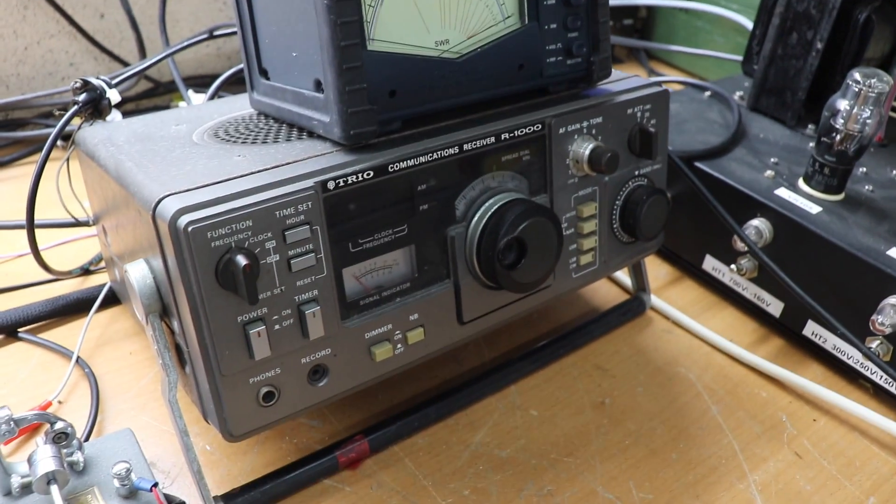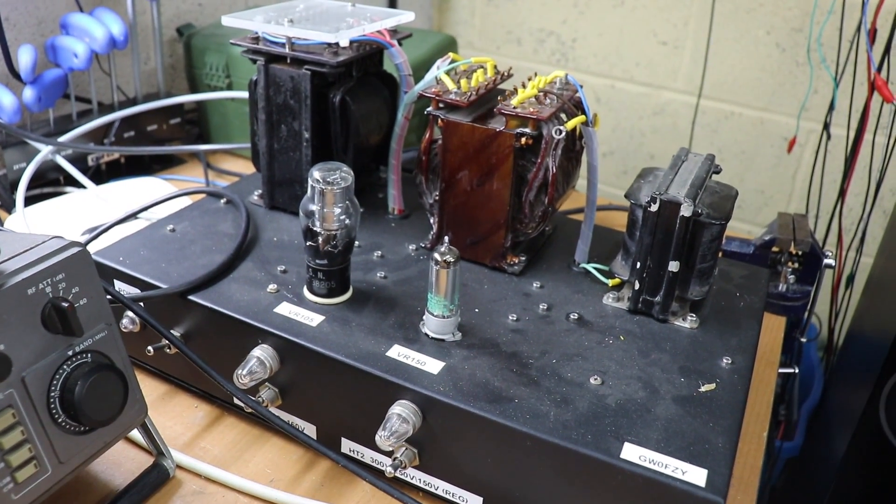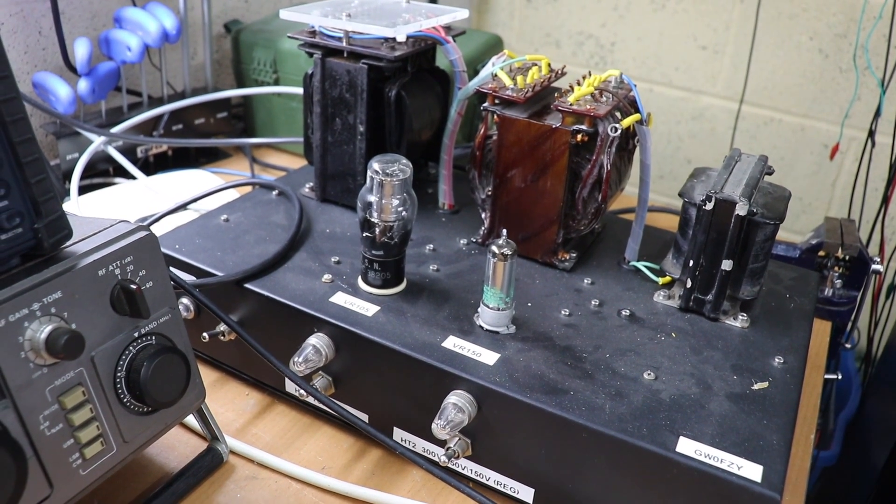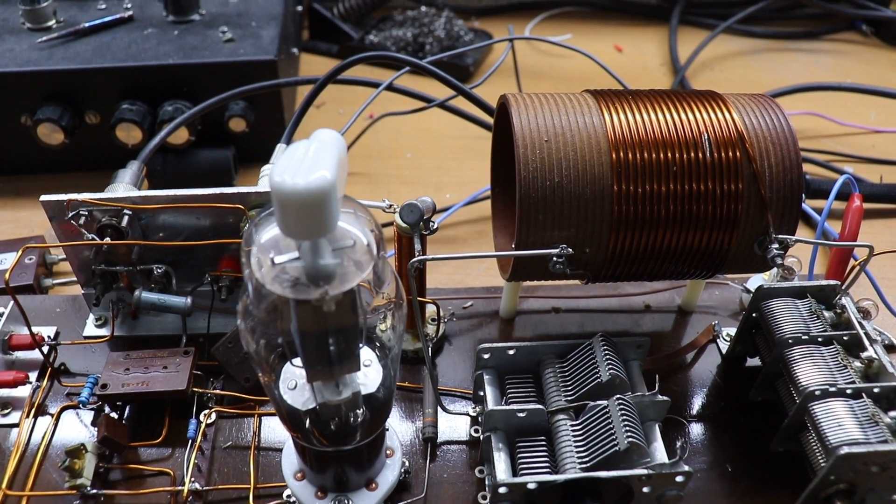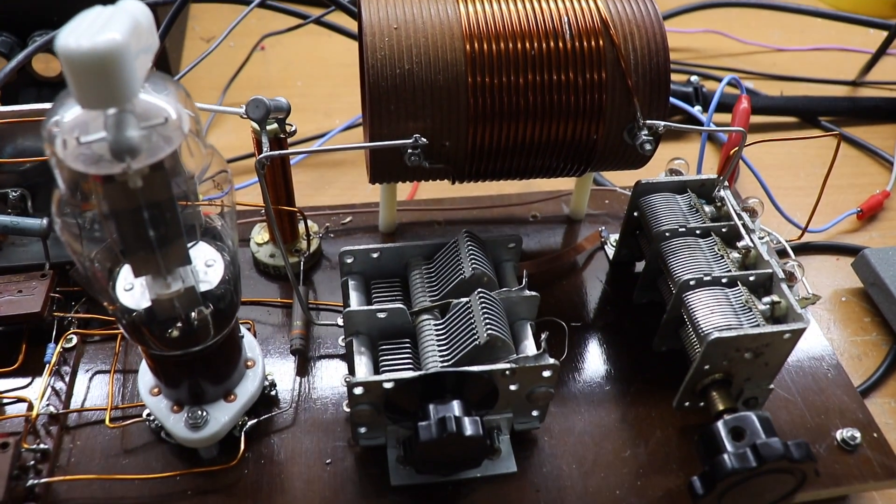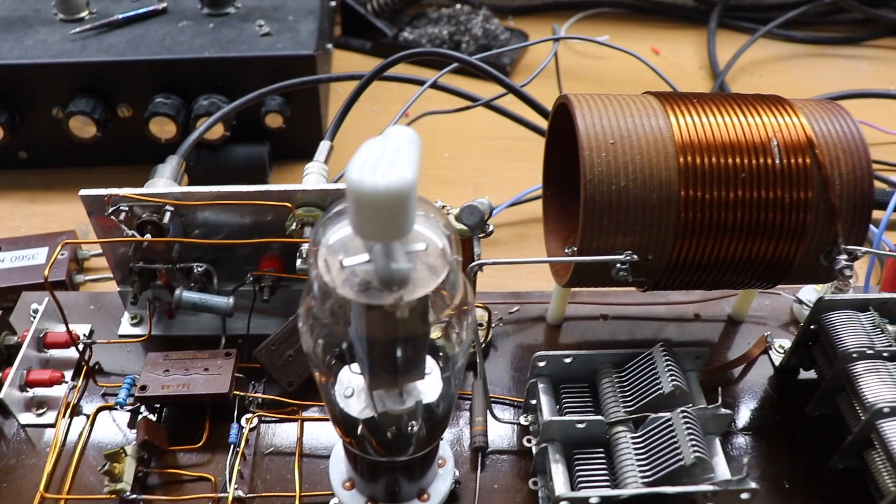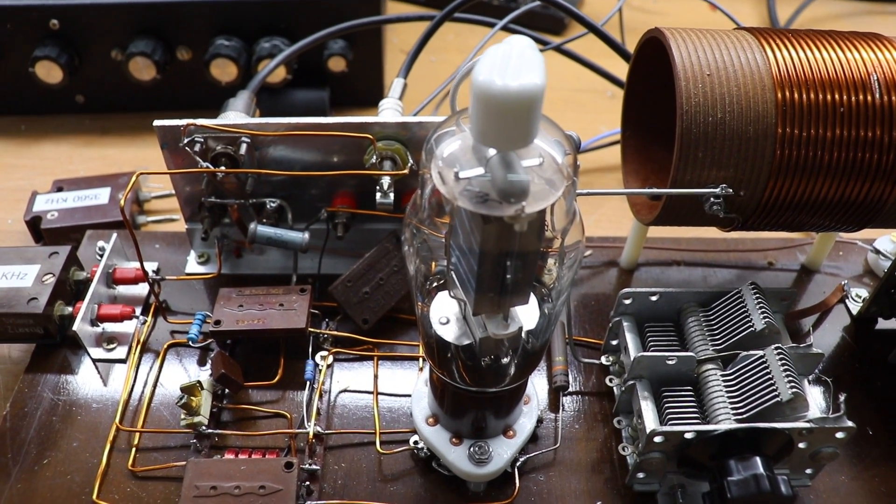We've got a separate receiver and the trusty straight key. That's a power supply which is from another project which I've rigged up to supply the HT. The beauty of this rig is all it needs is heater supply which in this case is 12 volts from my bench power supply and an HT supply which in this case is about 450 volts. It gives out about 10 watts. Let's give it a quick test run.